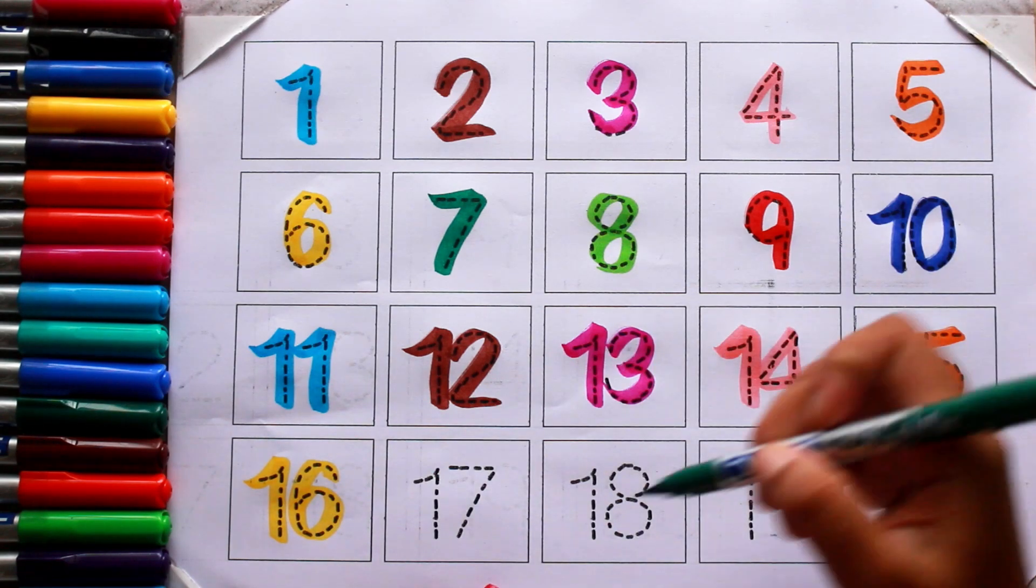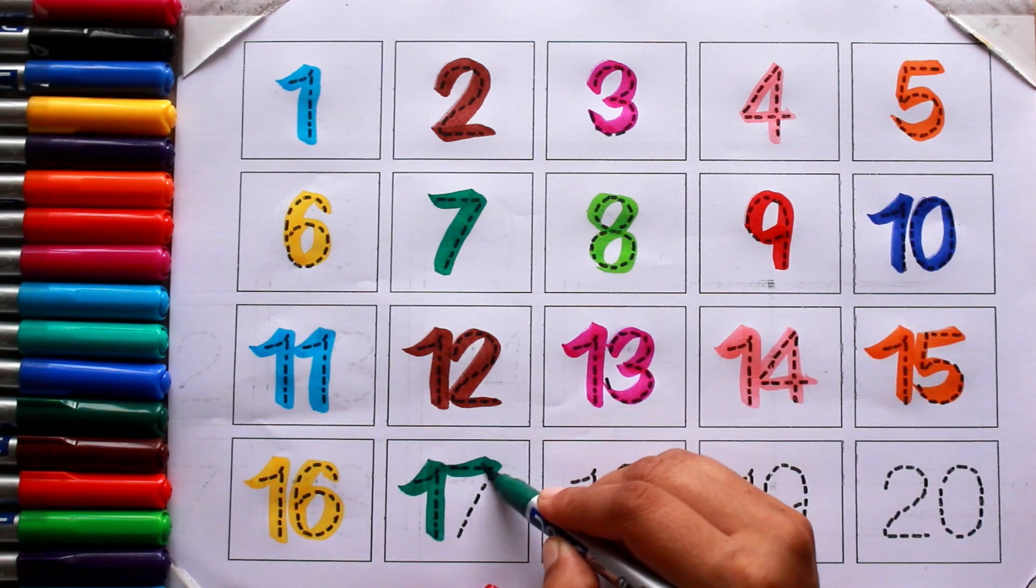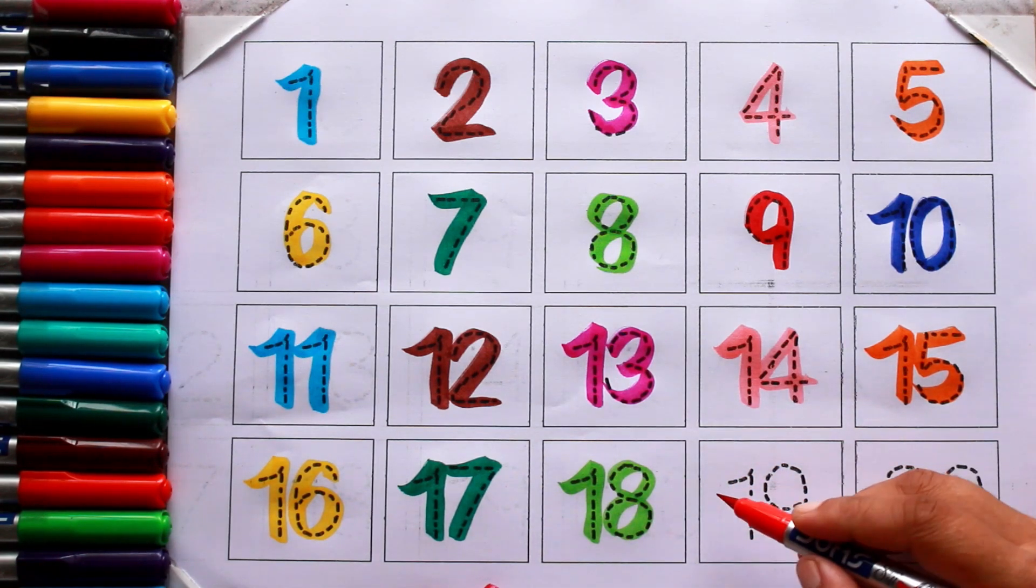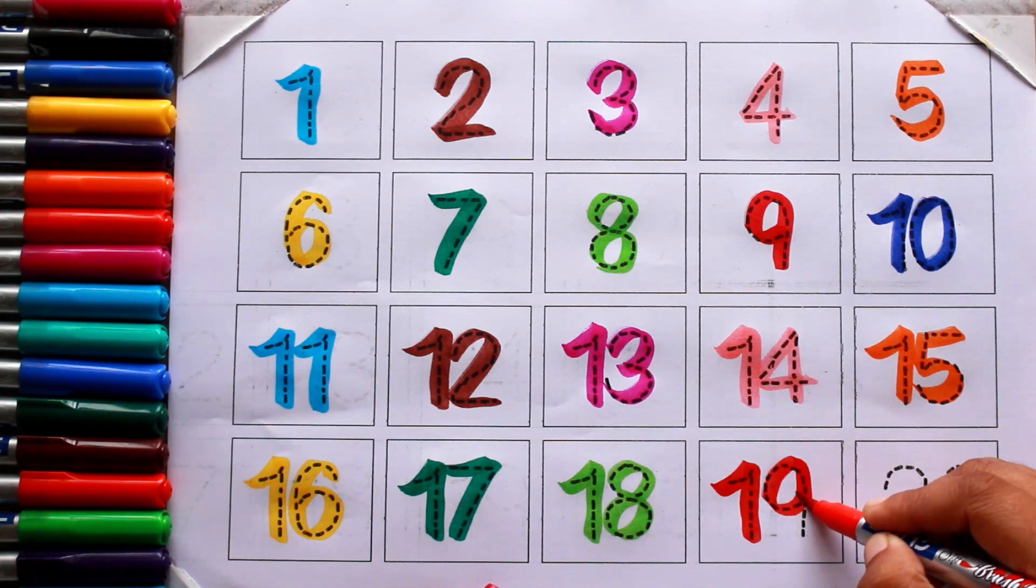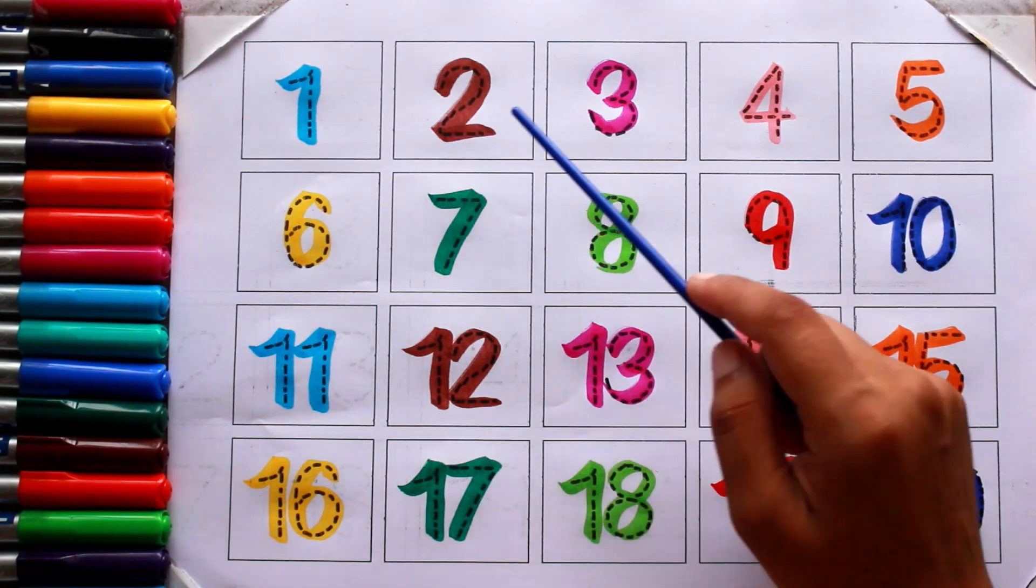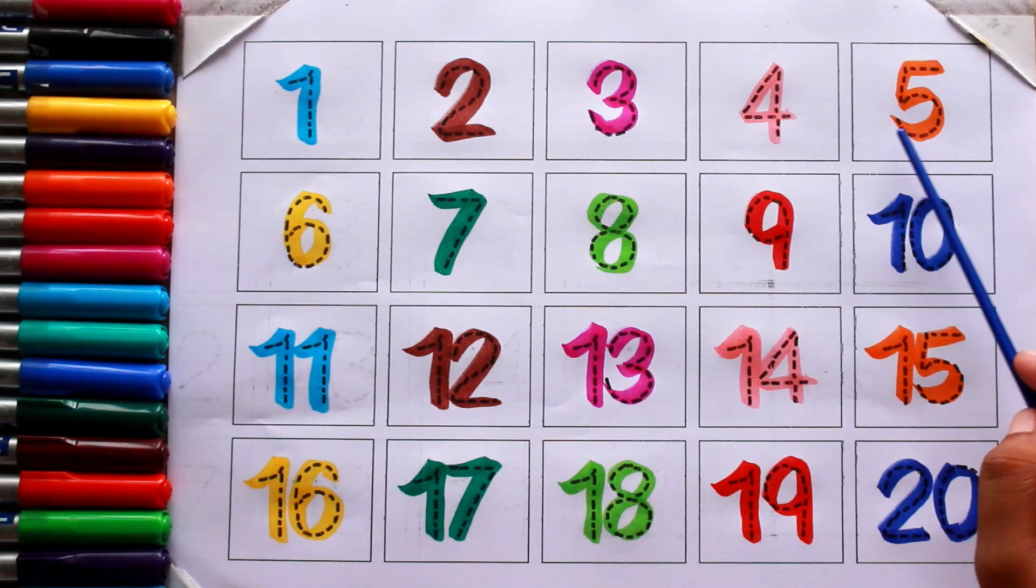green color seventeen, light green color eighteen, red color nineteen, blue color twenty. Once again: one, two, three, four, five